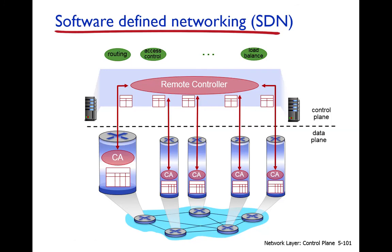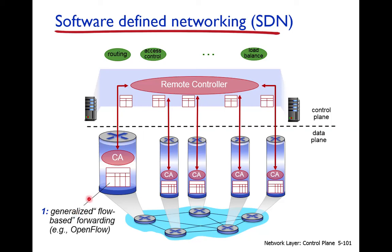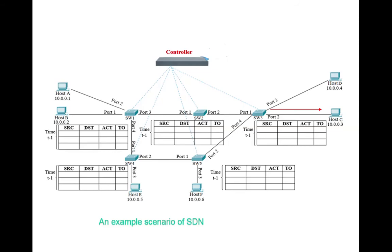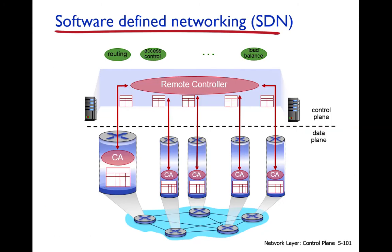We were discussing software defined networks. Before that, we discussed the limitations of per-router control architecture. SDN basically uses generalized flow-based forwarding. In SDN, the flow forwarding pattern is defined not only based on the network layer but also using the MAC layer, the transport layer, and other protocol fields.